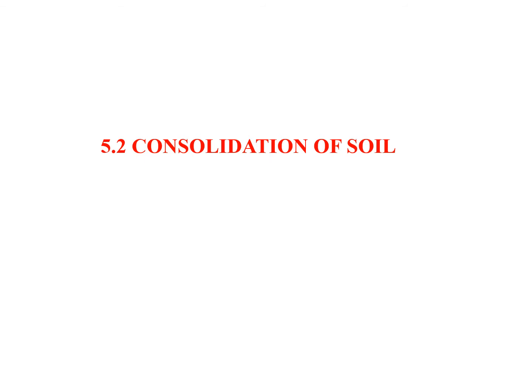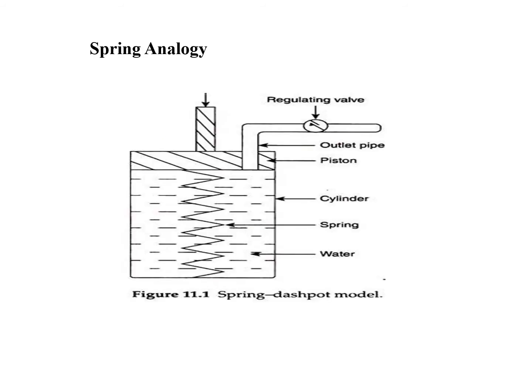Now about the spring analogy — you can see in the diagram a spring dashpot model. It consists of a cylinder connected with a spring and supported by a piston. It also consists of a regulating valve where the outflow of water can be regulated, and there is a load applied on this cylindrical container filled with water.